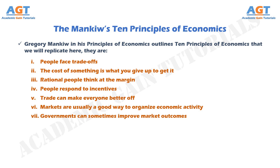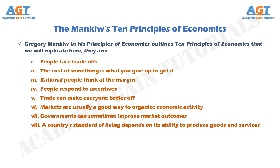Principle No. 8: A country's standard of living depends on its ability to produce goods and services. The differences in living standards around the world are staggering. In 1997 the average American had an income of about $29,000. In the same year, the average Mexican earned $8,000, and the average Nigerian earned $9,000. This large variation in average income is reflected in various measures of the quality of life. Citizens of high-income countries have more TV sets, more cars, better nutrition, better health care, and longer life expectancy than citizens of low-income countries. Because lower investment today means lower productivity in the future, government budget deficits are generally thought to depress growth in living standards.